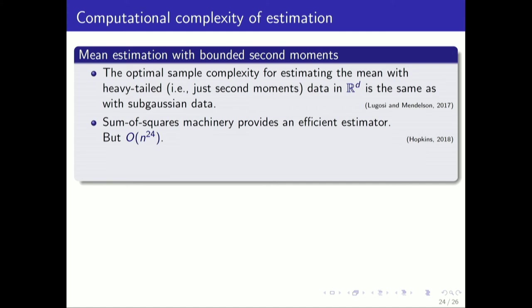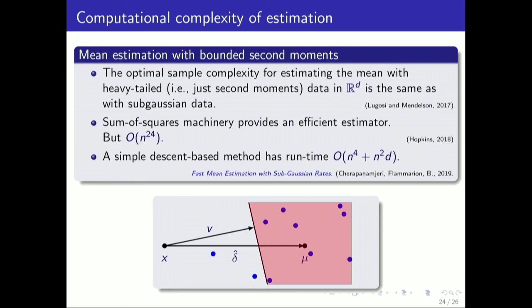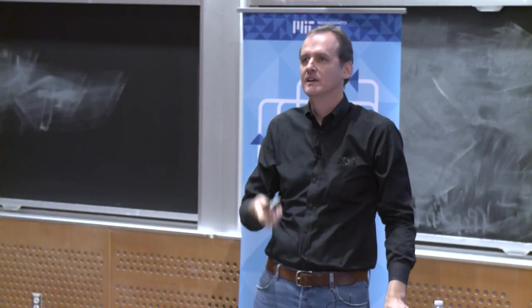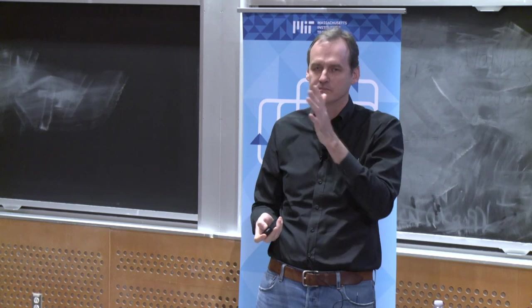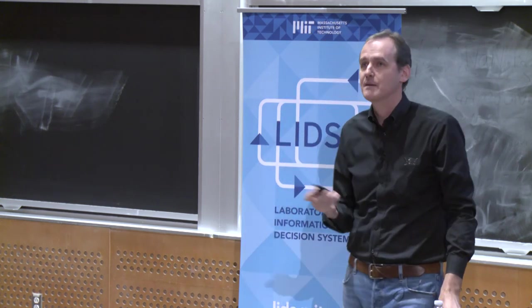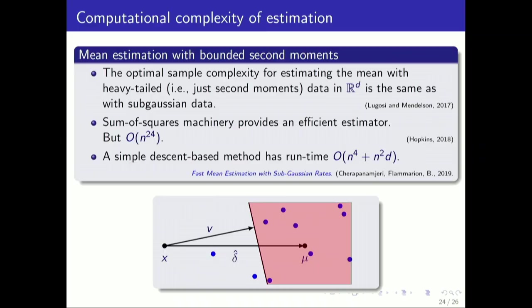Lugosi and Mendelson showed that you had the same rate as sub-Gaussian data. But computing it is problematic. They presented a kind of tournament algorithm that looked in exponentially many directions in some sense. Sam Hopkins showed you could use the sum of squares machinery, semi-definite programming sort of approaches to provide an efficient estimator that was really a kind of sum of squares rewrite of the proof in the Lugosi-Mendelson paper. Of course, it's not such a practical thing. But it turns out you can use the same sort of ideas. You can come up with a simple descent-based method that's based on a semi-definite program.